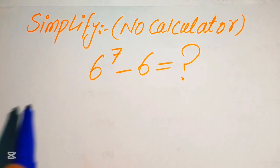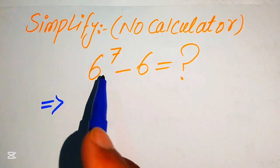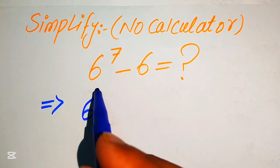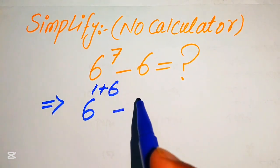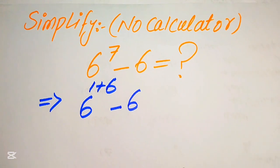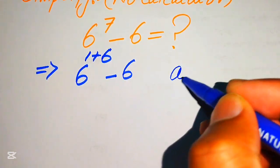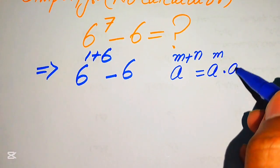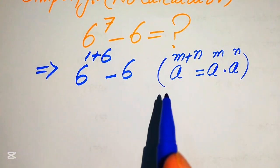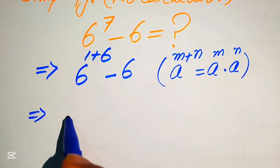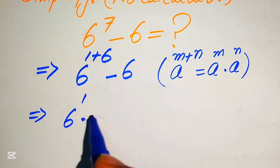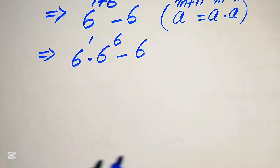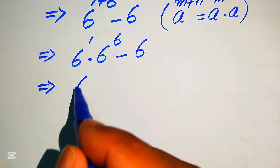The very first step is to break the exponent of the first term. The exponent is 7, so we write it as 6 to the power of (1 plus 6), minus 6. We apply the exponent law: a to the power of m plus n equals a to the power of m multiplied by a to the power of n. This lets us write 6 to the power of 1, multiplied by 6 to the power of 6, minus 6.